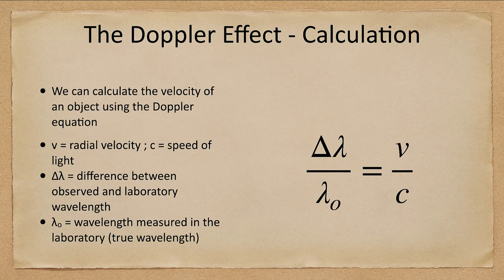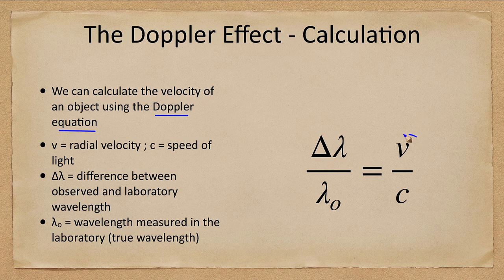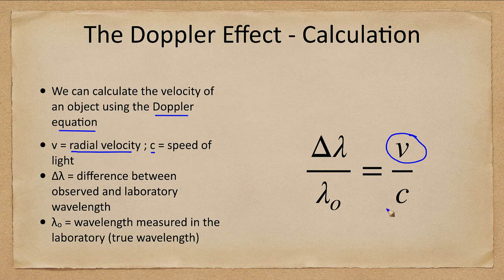Let's go ahead and look at an example of how we can calculate this. We can calculate the velocity using the Doppler equation. The Doppler equation we want to look for V. V is the radial velocity, the velocity along the line of sight. That is the part of the velocity that we can measure. C is just a constant, that is the speed of light. So we know that value: 300,000 kilometers per second. Delta lambda, delta means change.